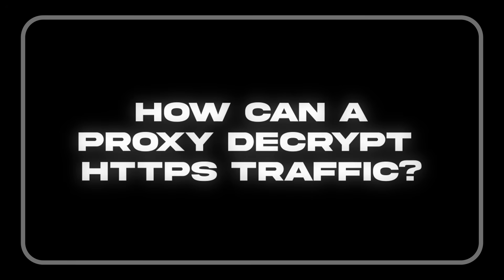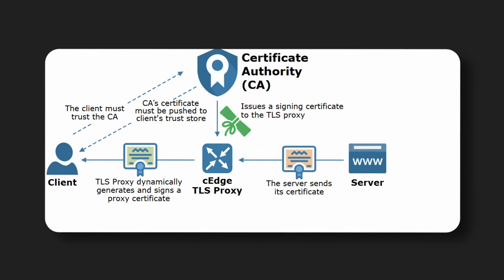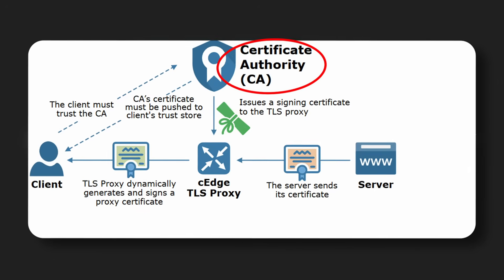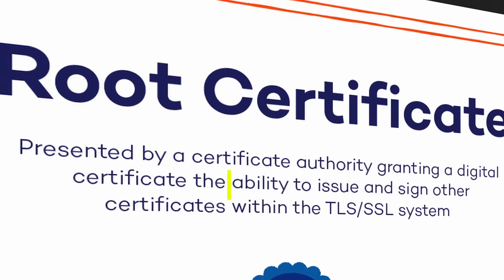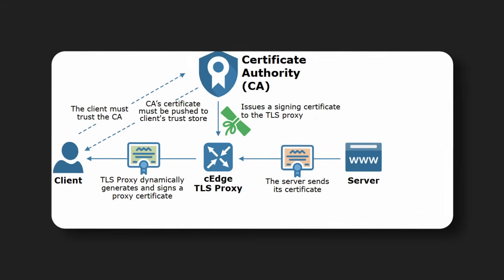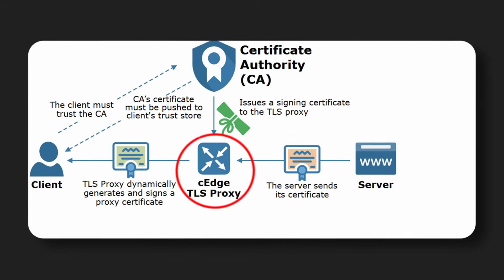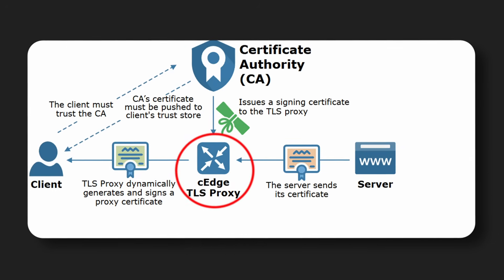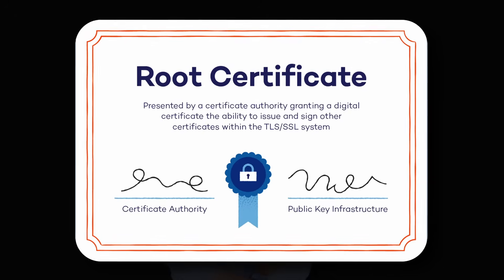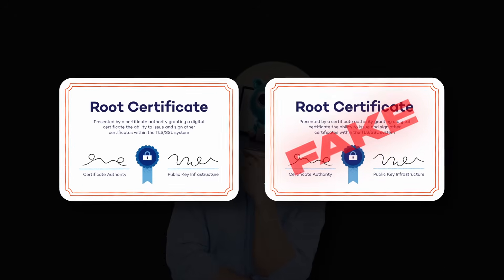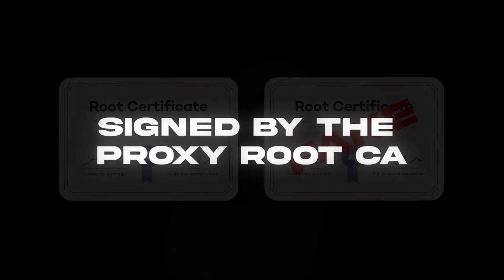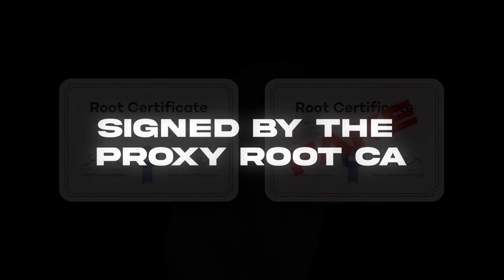But how can a proxy decrypt your HTTPS traffic? The proxy has its own root certificate authority or CA — a special certificate that allows it to issue trusted certificates for any domain. The proxy intercepts your HTTPS request, such as when your browser says "connect example.com." When your browser expects a certificate from example.com, the proxy forges a fake certificate for that domain on the fly, signed by the proxy's root CA.